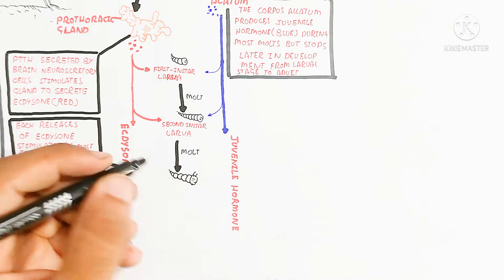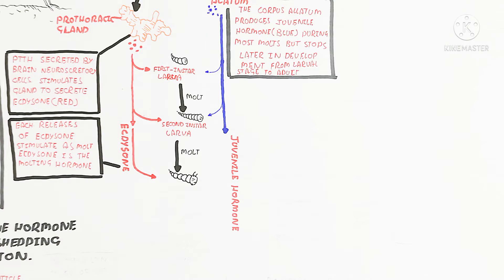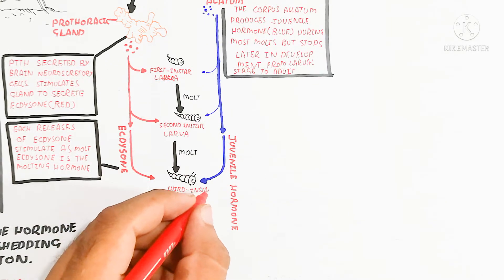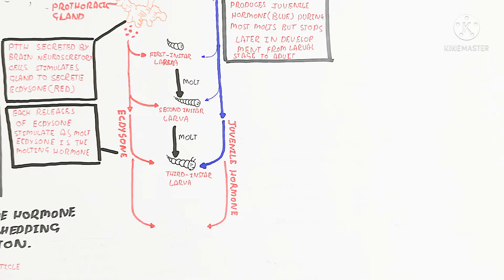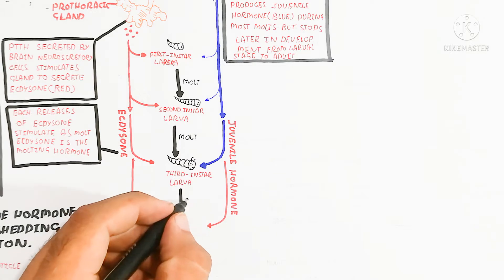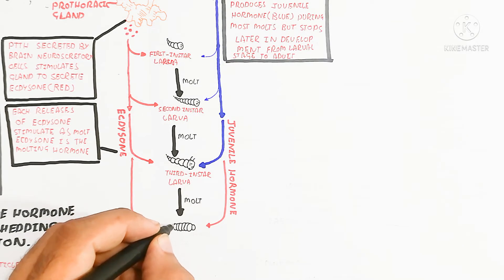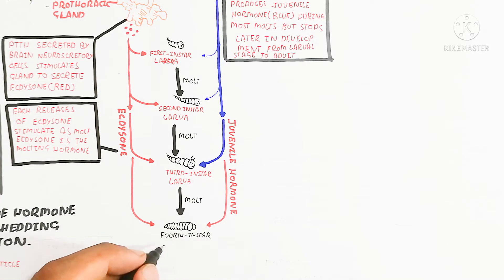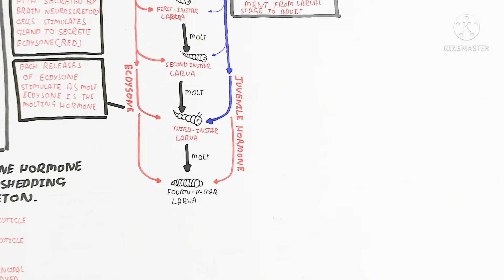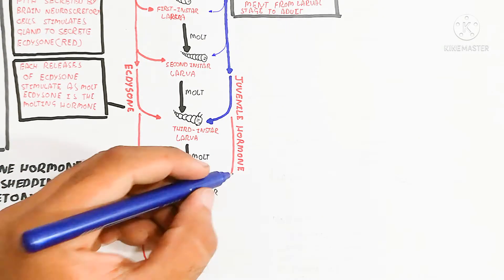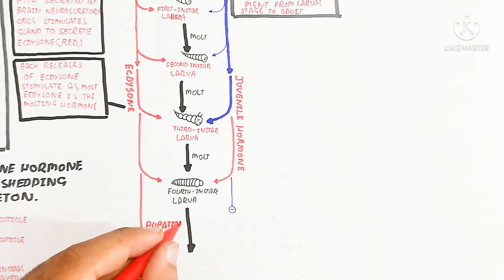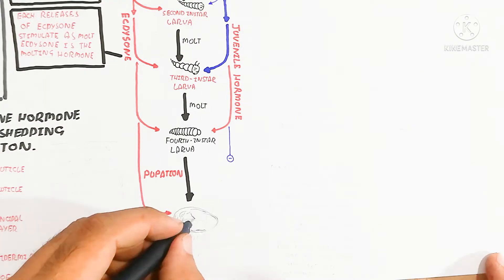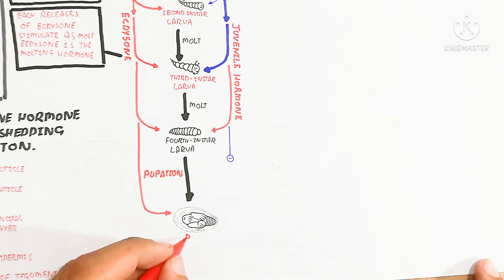So the first molt, second molt, then after the second molt increasing of ecdysone occurs. The third instar larva molts, then the fourth instar larva molts. This molting is used for the growth of the larva, not development — not changes in form. When changes begin, that is known as metamorphosis. The important characteristic of the insect is metamorphosis — the change from larva to pupa and then to adult.